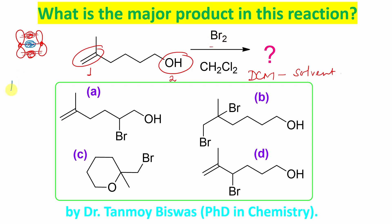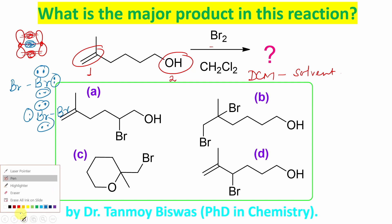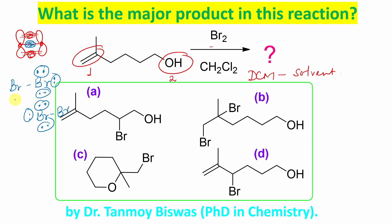Now, bromine means Br–Br single bond. Generally, if you look at bromine, these molecules have induced dipole–induced dipole interaction. What do I mean? Each bromine atom has three lone pairs of electrons. If two bromine atoms come closer, electron–electron repulsion will take place. So in order to counter this, what the molecule does is create a dipole — charge separation occurs because of the closeness of the two molecules.